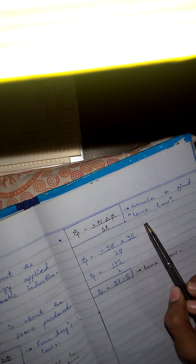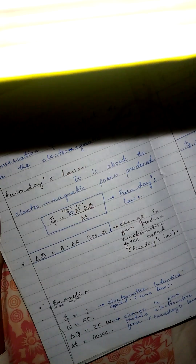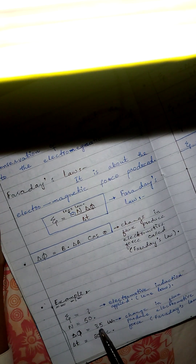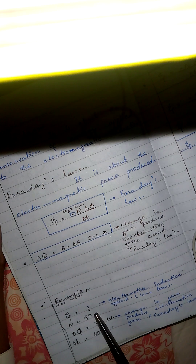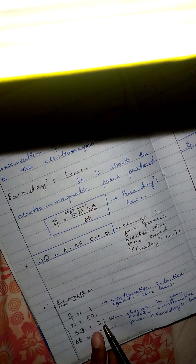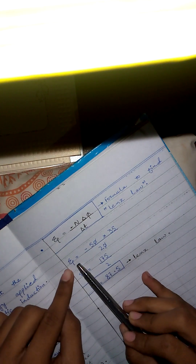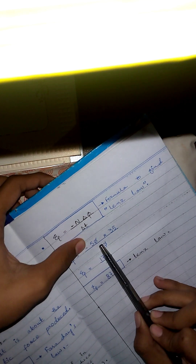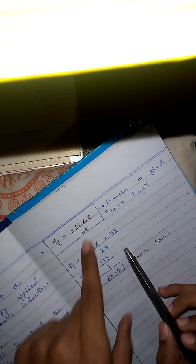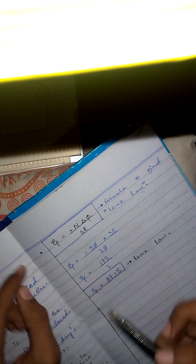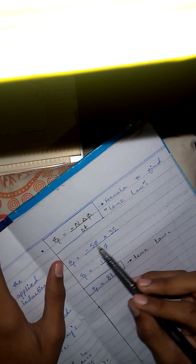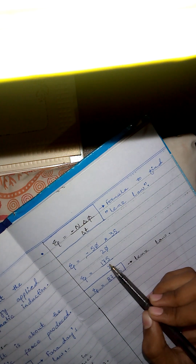We will solve using the formula: EMF = −N × (ΔΦ/Δt). Substituting values: number of turns is 50, with the minus sign from Lenz's law, change in flux is 35, and change in time is 20. We cancel the zeros: −5 × 35 = −175, then 175 divided by 2 gives 87.5.